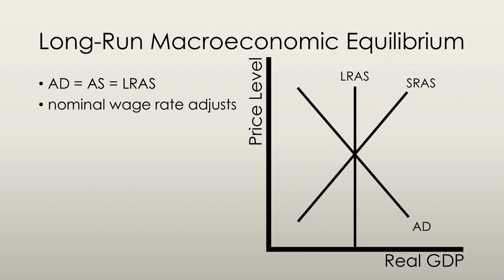If the money wage rate is too low, then short-run equilibrium is above potential GDP, and unemployment is below the natural rate. And with an excess demand for labor, the money wage rate rises.